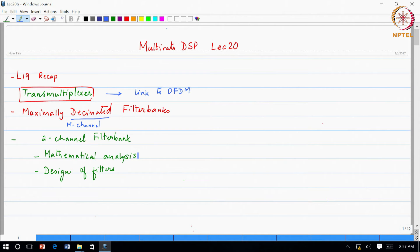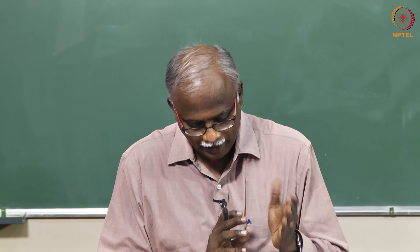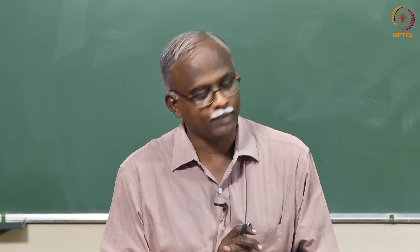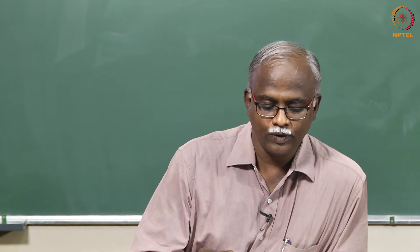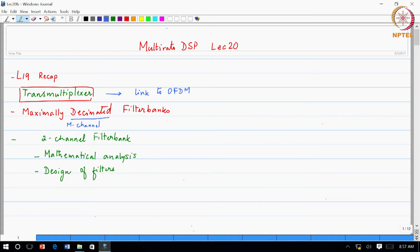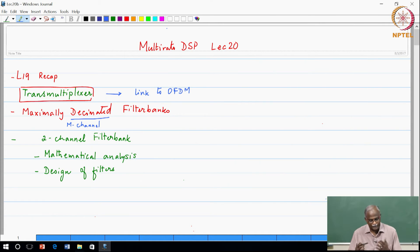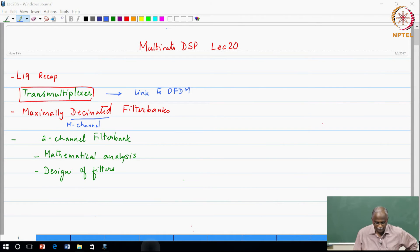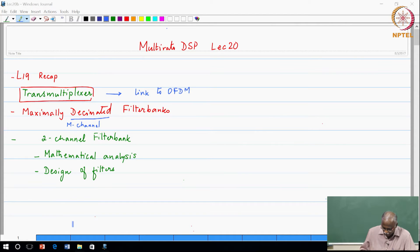Good morning. In today's lecture, we will be covering a lot of ground on the maximally decimated filter banks. We will look at the special case where M is equal to 2 channels, and it requires a fair amount of work to understand the mathematical analysis: how the filters behave, how we design them, and how the whole system works together. Before that, there were a few questions after yesterday's lecture, so I will clarify those doubts in case they are broader doubts among other students as well.